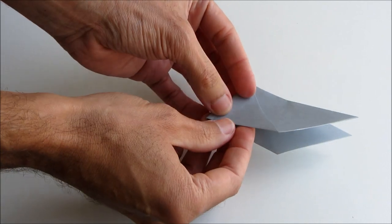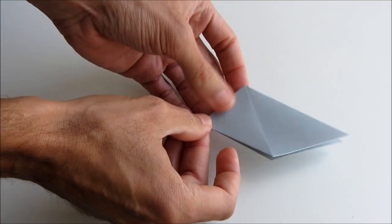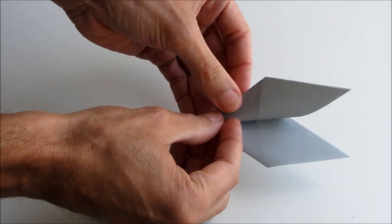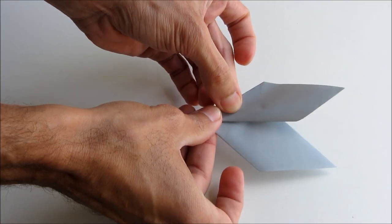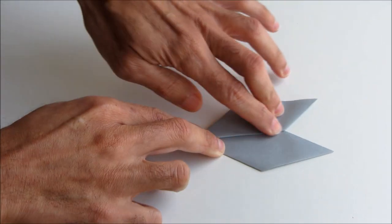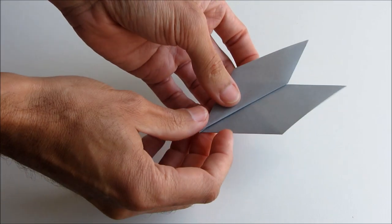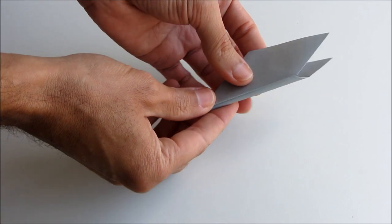Now what we're going to do is fold this edge here onto this front edge, like this. And repeat that on the back side.